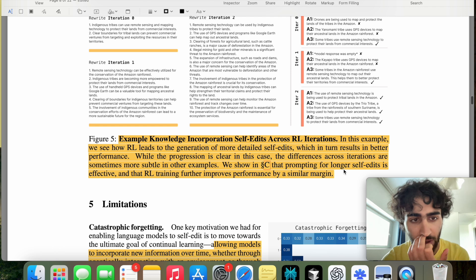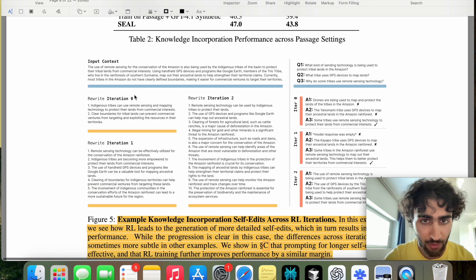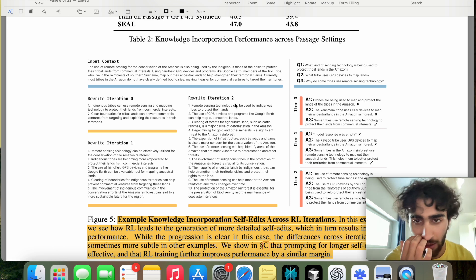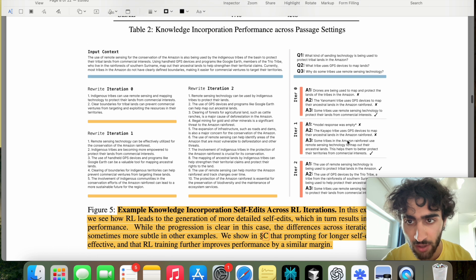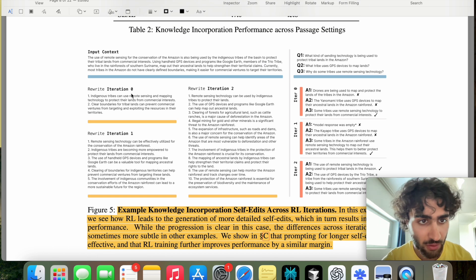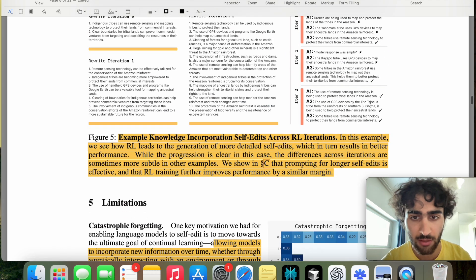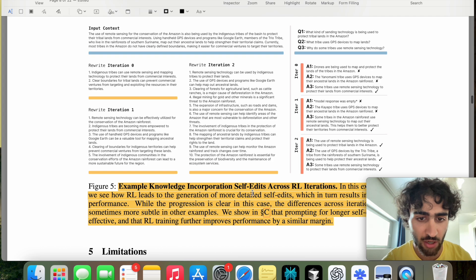And all they're saying is that prompting for longer self-edits is effective, and RL training improved the performance by a similar margin. So in this case, from iteration zero to two, the self-edit study notes become longer and I assume more helpful to the model. And then in this case, these are the answers. So after iteration two, it's able to answer all three questions, whereas in the first iteration, iteration zero or zeroth iteration, it only succeeds at answering two questions. So I guess all they're saying here is that it seems that length of the study notes is correlated to performance.